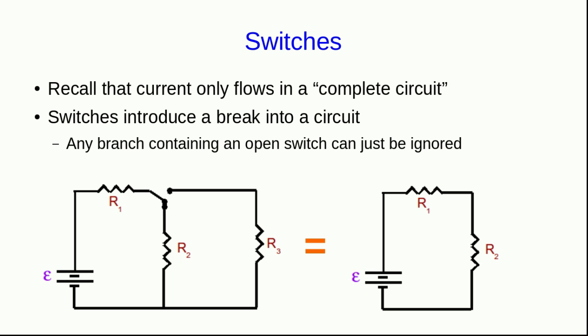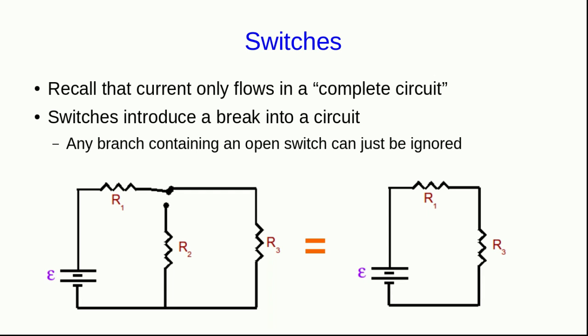Here's another type of switch. This switch has two settings. In this setting, it's equivalent to the circuit which contains the branch with R2 in it. But when the switch is put to the other position, the branch with R2 no longer matters, and the circuit only contains the branch with R3.